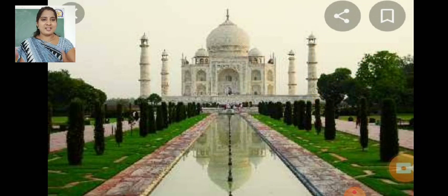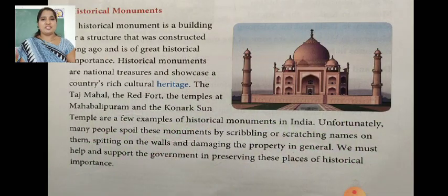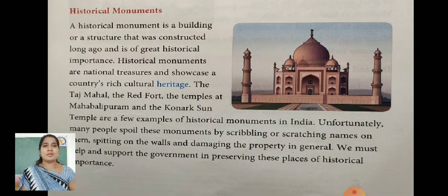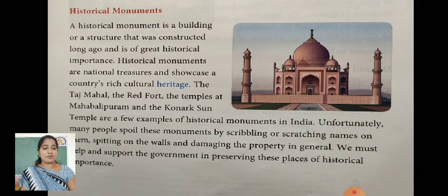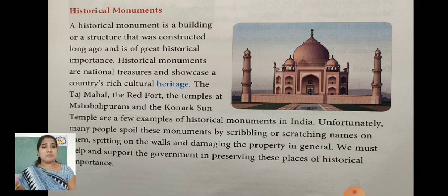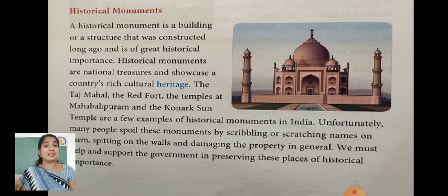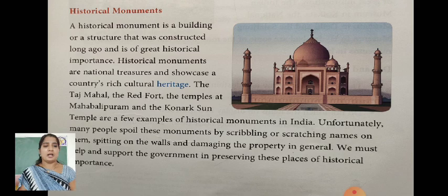See this beautiful picture — this is the Taj Mahal. These are our historical monuments. A historical monument is a building or structure that was constructed long ago and is of great historical importance. Historical monuments are national treasures and showcase a country's rich cultural heritage. Heritage means something that is handed down from earlier generations. Examples of historical monuments in India include the Taj Mahal, the Red Fort, the temples at Mahabalipuram, and the Konark Sun Temple.